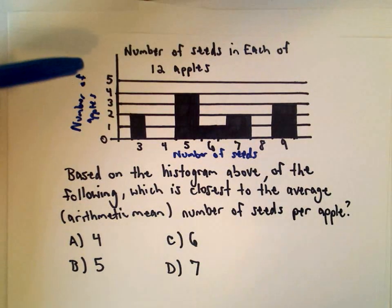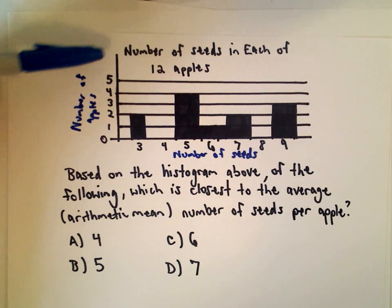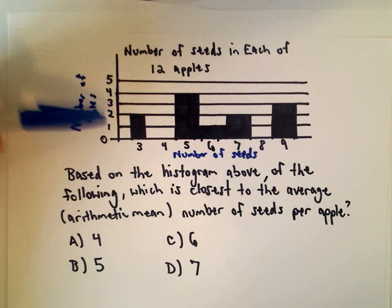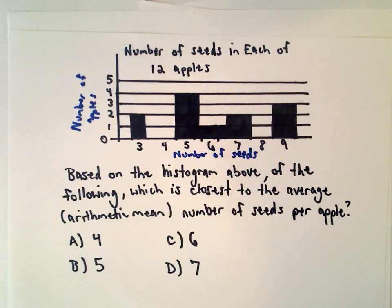Okay, so here we're given a histogram. It says the number of seeds in each of 12 apples. The vertical axis is the number of apples. The horizontal axis represents the number of seeds.